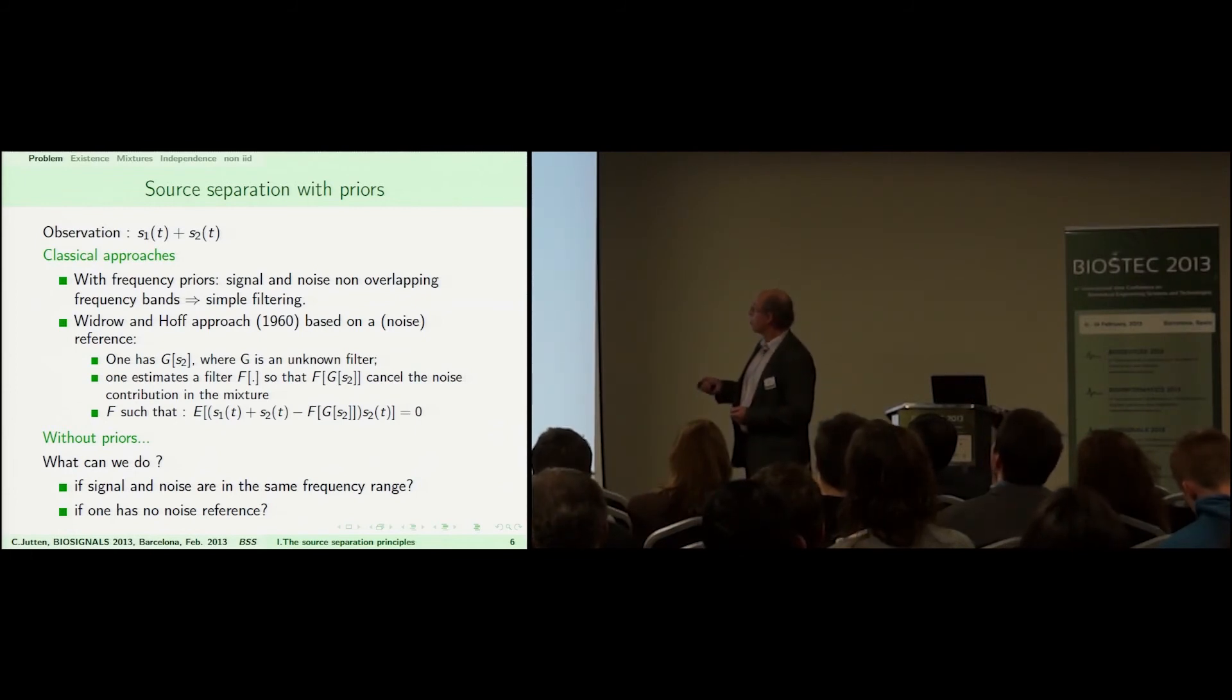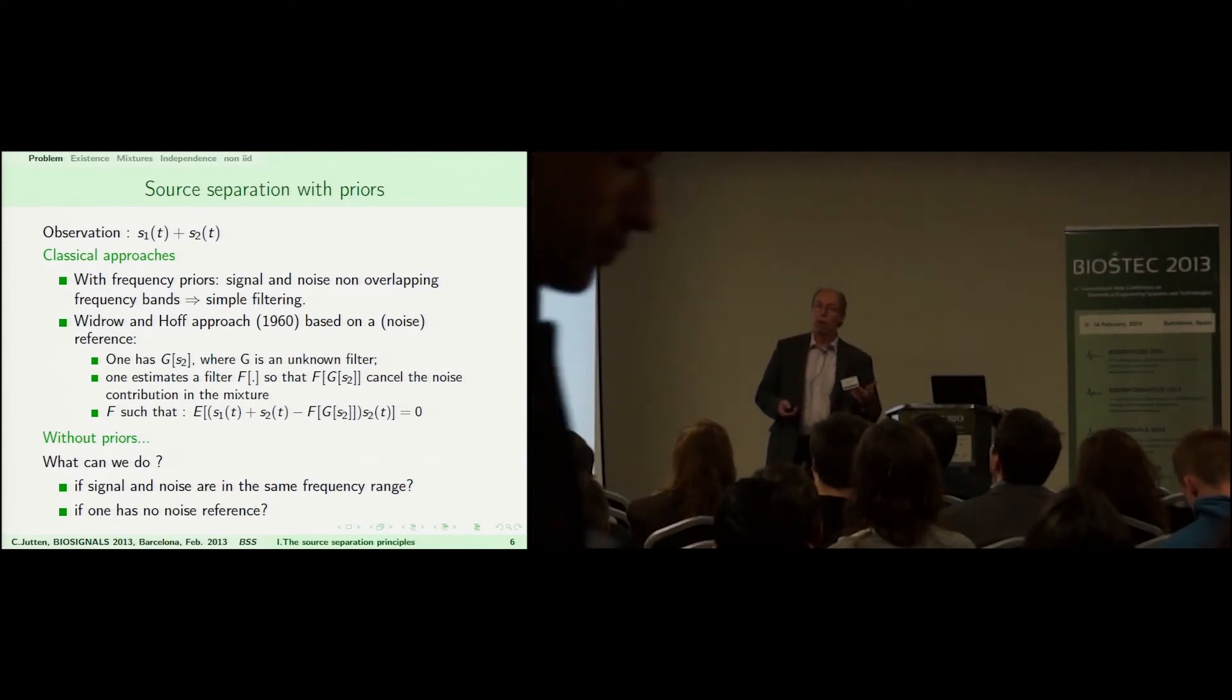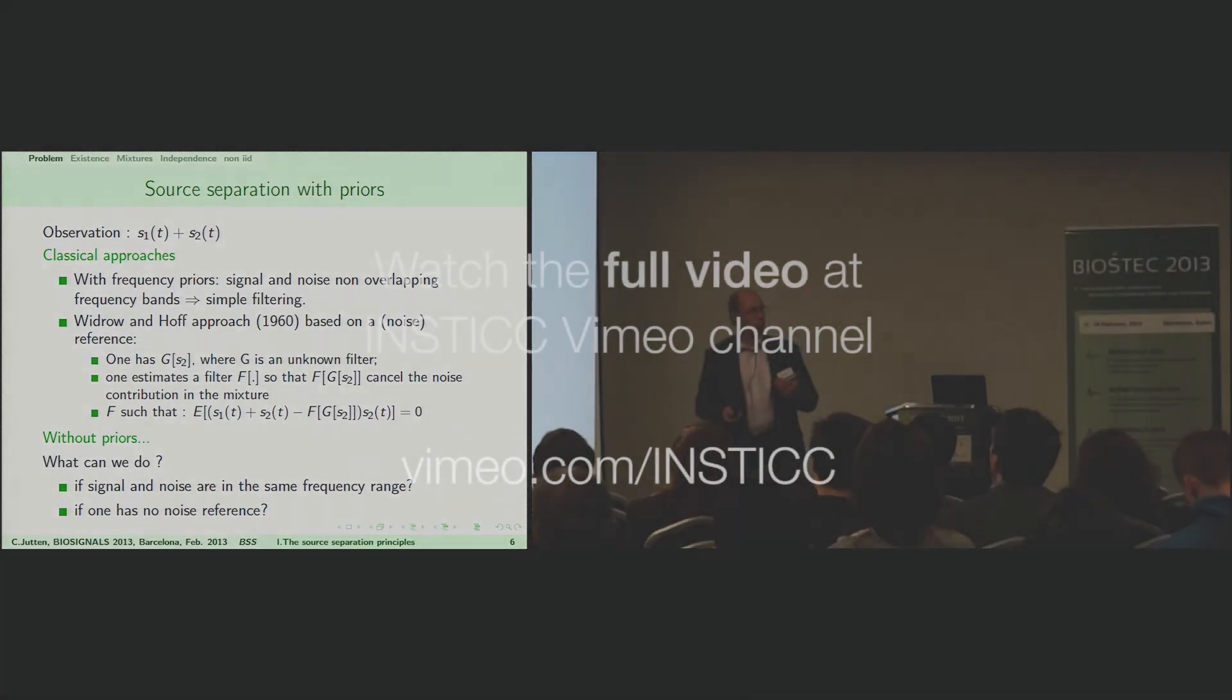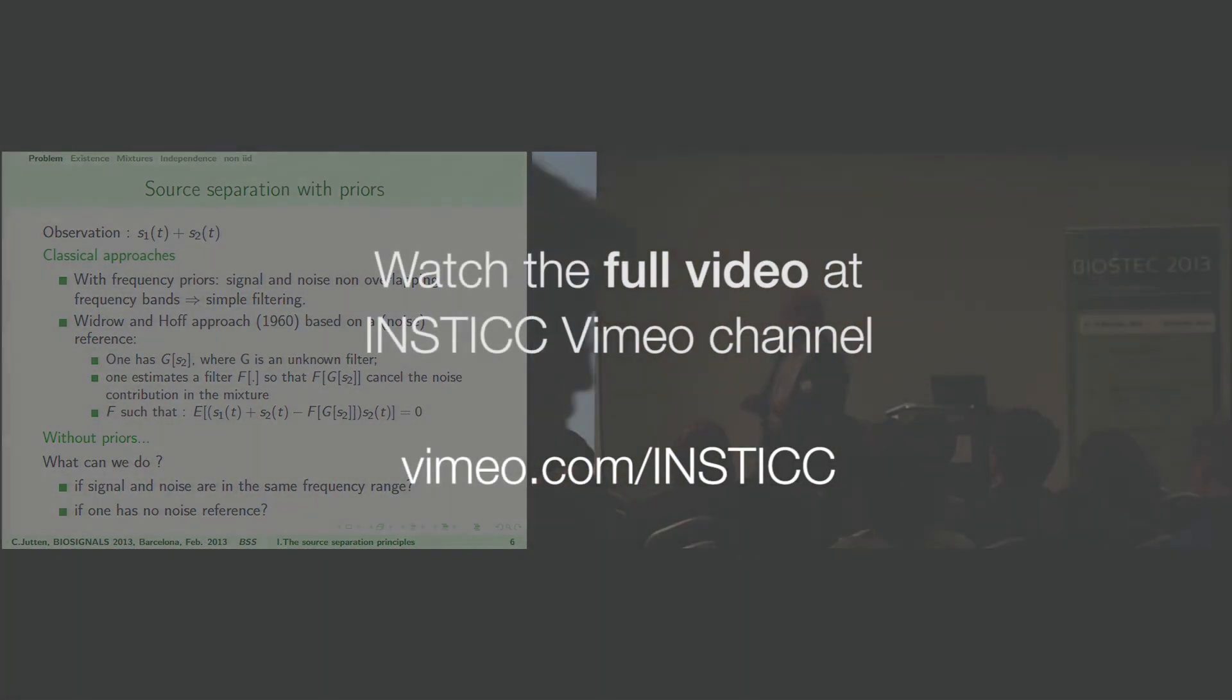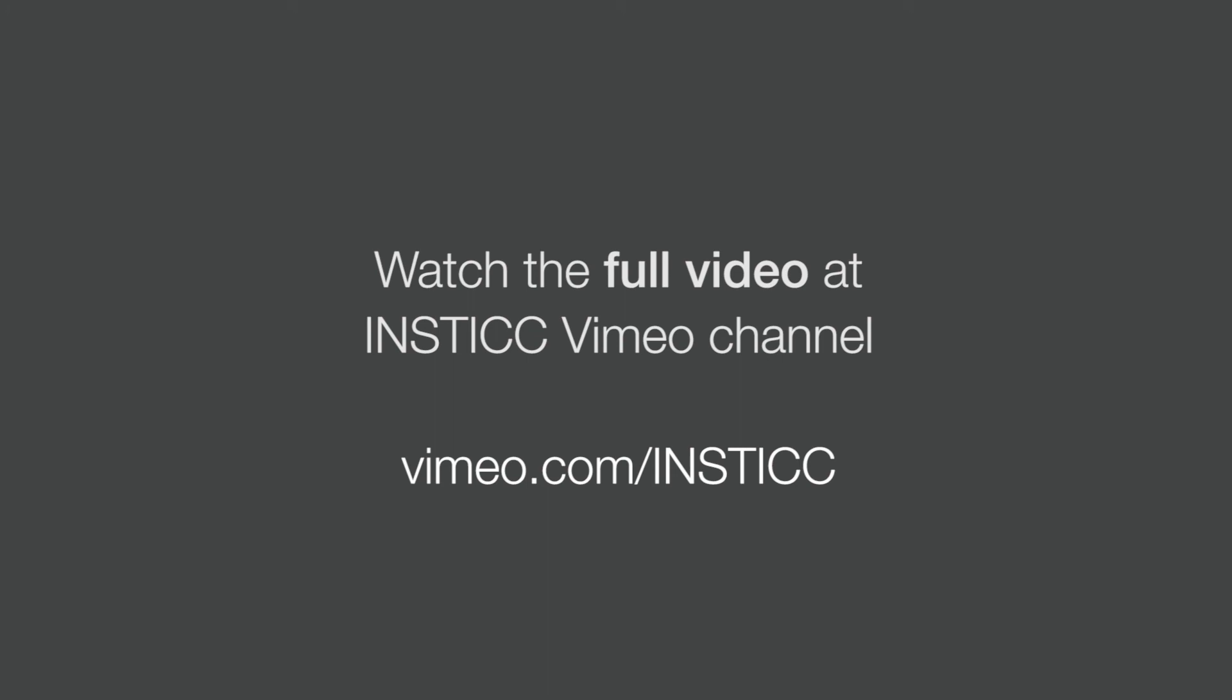If you have other information, methods of noise subtraction are well known. If you have, for instance, one reference of the noise signal which is not of interest, you can remove it by subtraction, very simply with second-order statistics. This has been well known for a long time.